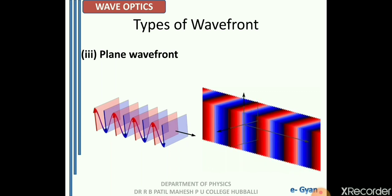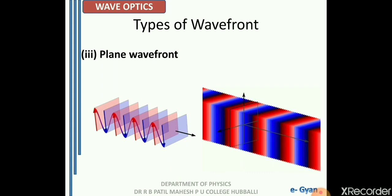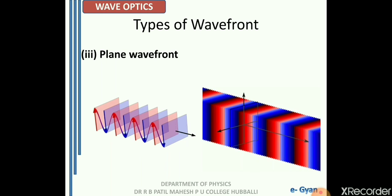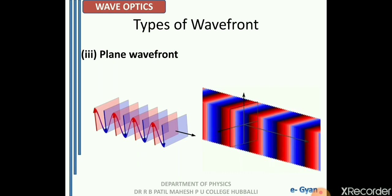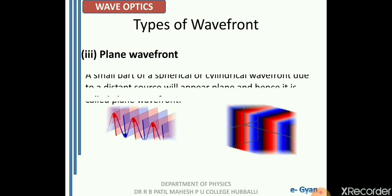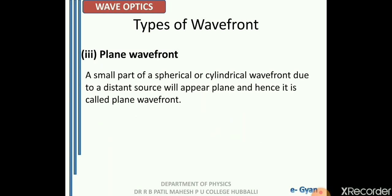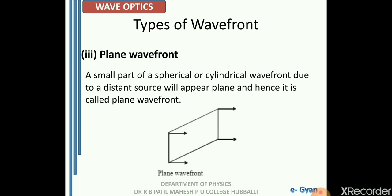Due to a point source at the center of the earth, the wave front that reaches the surface is spherical in nature. But rather than seeing the whole structure, if I choose a part of the wave front, it appears flat — just as the ground appears flat. Therefore, the plane wave front is defined as a small part of a spherical or cylindrical wave front due to a distant source which appears plane. Whenever the source is at a larger distance from the point of observation, we can only see its part and that small part appears as plane. So we have three types of wave fronts: spherical, cylindrical, and plane.